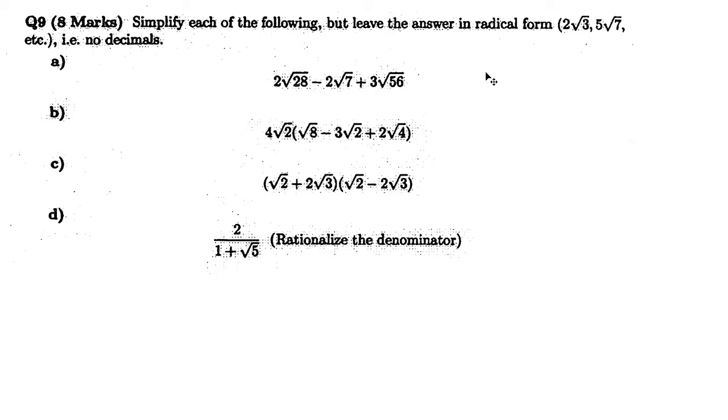Alright, we're going to be doing some simplifying of radicals on this question. Let's take a look at the first one here: 2 root 28 minus 2 root 7 plus 3 root 56. Do you guys remember how to do this kind of stuff? Do you know what square numbers are?